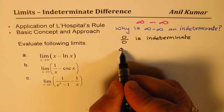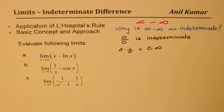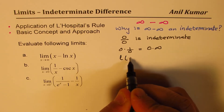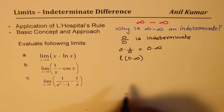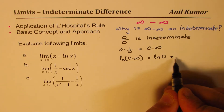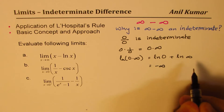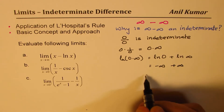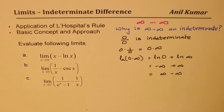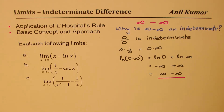Zero over zero can be written as zero times one over zero, which is as good as zero times infinity — so that is also indeterminate. Now if I take the log of zero times infinity, I get ln(0) plus ln(infinity). ln(0) approaches minus infinity and ln(infinity) approaches plus infinity, so we get infinity minus infinity, which is also indeterminate.